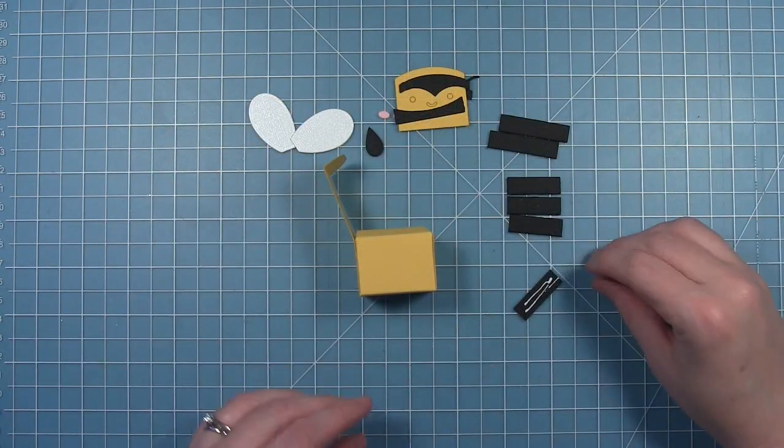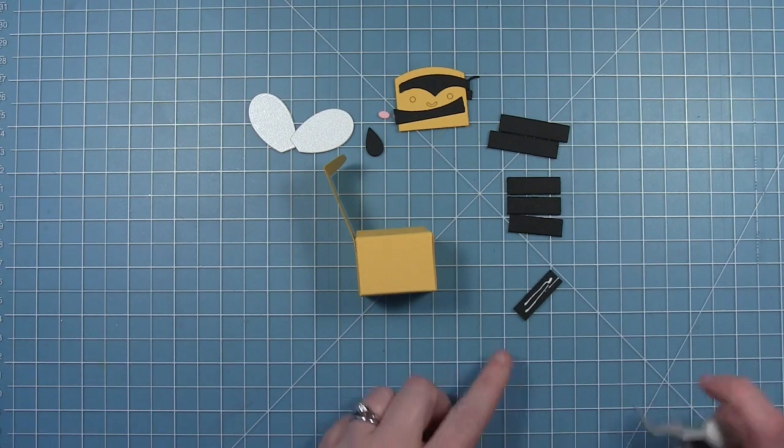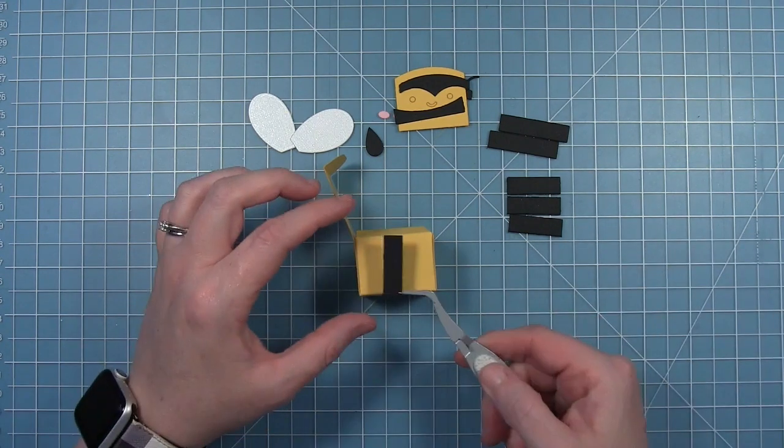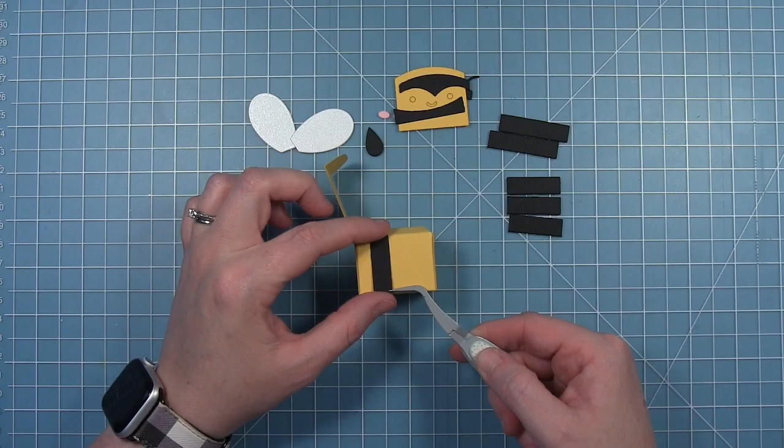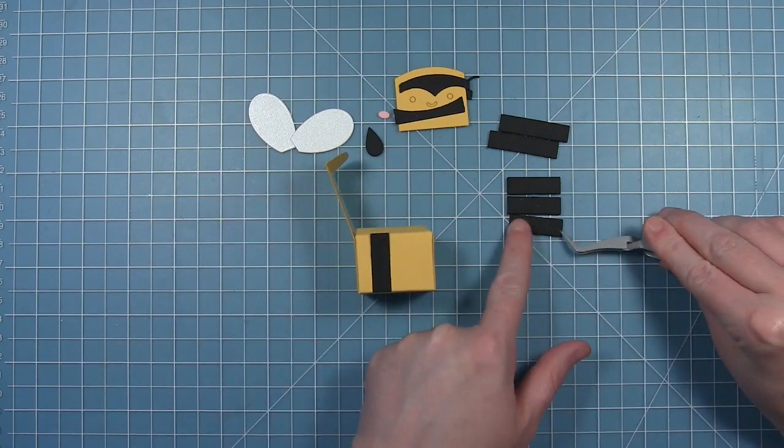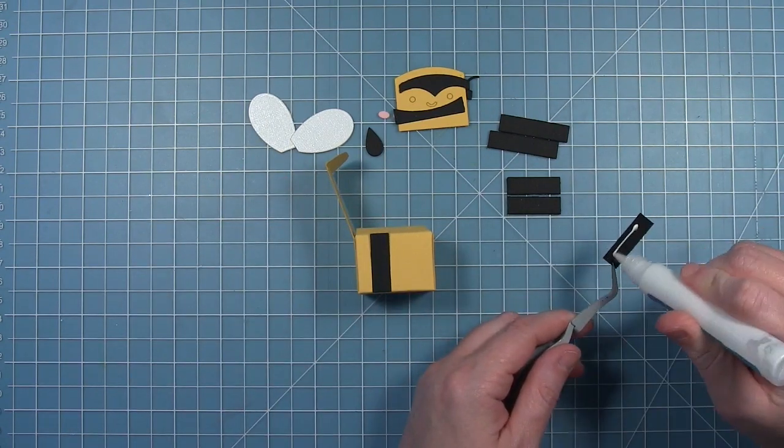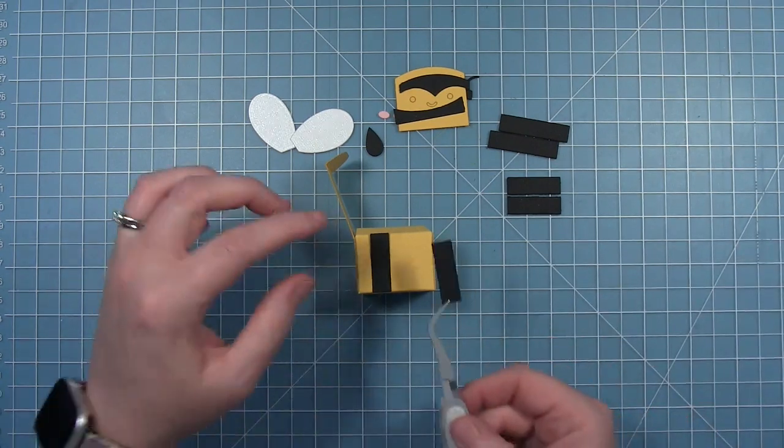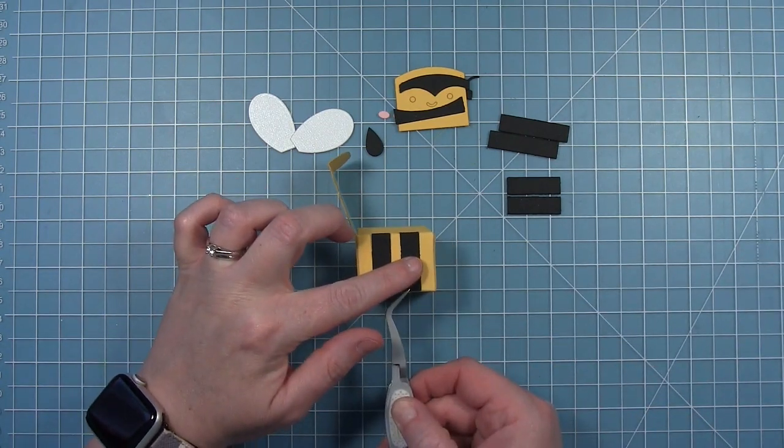The die that cuts the four bars that you see here decorate the sides of the box. These are a little bit shorter and they fit the sides of the box perfectly. You're going to use two on each side to create the stripes of the bee.